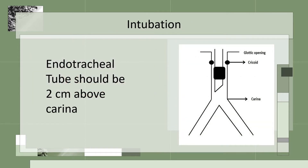This is another picture of the endotracheal tube showing where it should be two centimeters above the carina. You can see the cricoid, the glottic opening, and the carina in this picture.